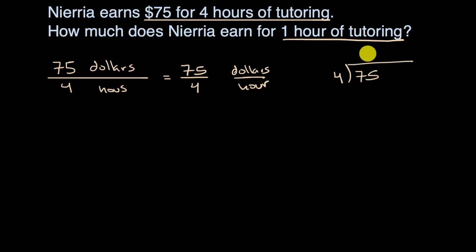So four goes into seven, one times four is four. We're going to subtract seven minus four is three. Bring down that five. Four goes into 35 eight times. Eight times four is 32. I will subtract again. I get a three.